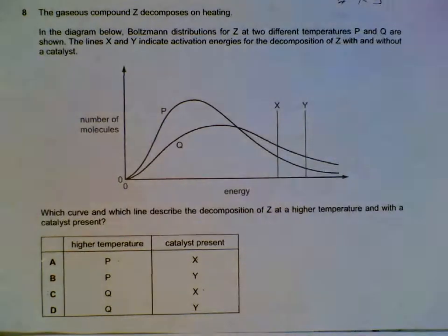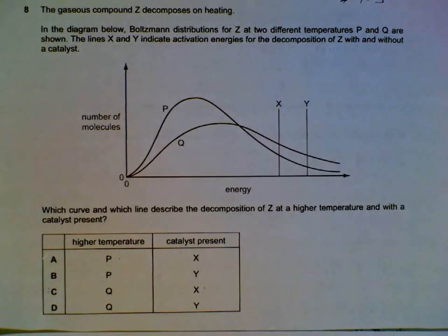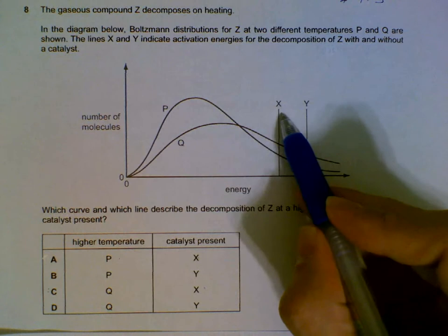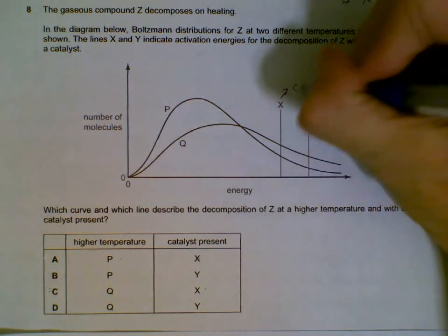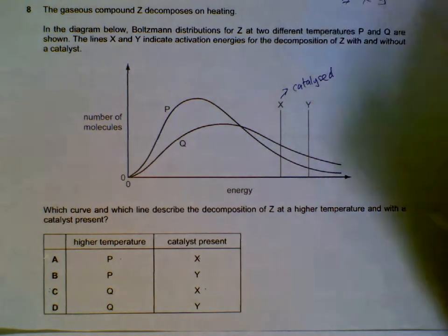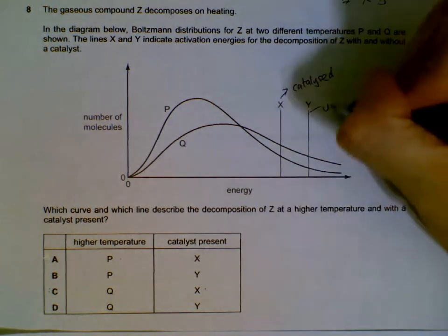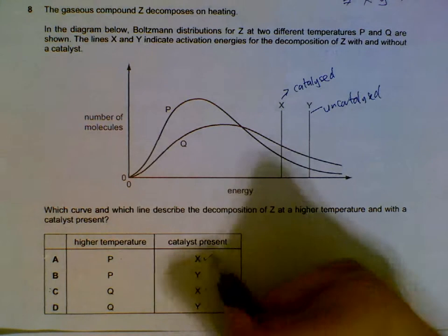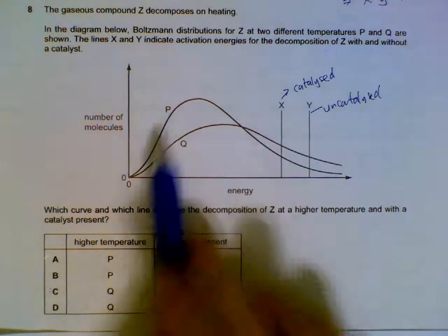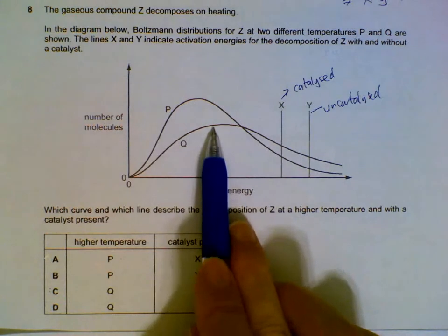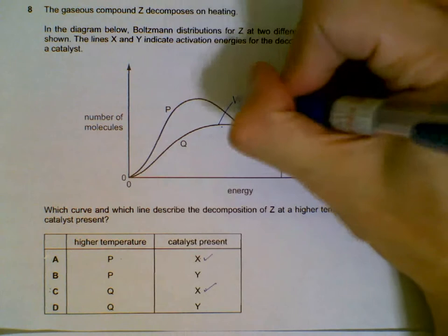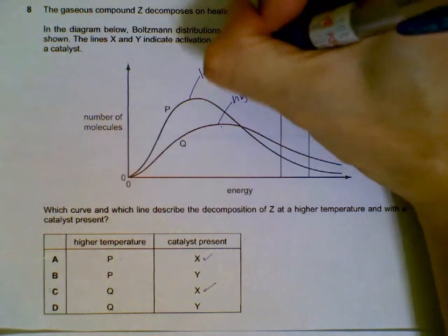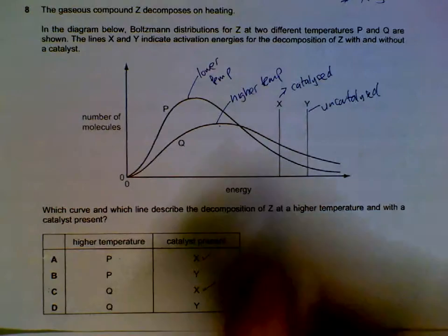We have a Boltzmann distribution curve, question 8, between X and Y. X is the one that has a lower activation energy, so this is the catalyzed reaction. Y will be uncatalyzed. So catalyst present—we have these two options. And then temperature-wise, the one that has a lower peak that's to the right side will be the one that has a higher temperature. The one that has a higher peak on the left side will be the lower temperature. So higher temperature will be Q.